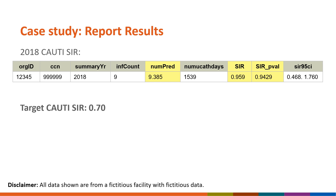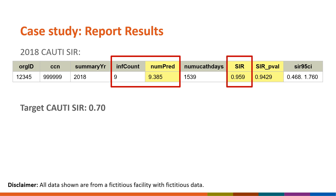From our generated report, we found that in 2018, our facility observed 9 CAUTIs and 9.385 infections were predicted. We see from the SIR p-value in the report that the SIR of 0.959 is not significantly different than 1. However, we also want to know if this SIR is significantly different than our target CAUTI SIR of 0.70. Now that we have observed events, predicted events, and target SIR, we are ready to use the Statistics Calculator.